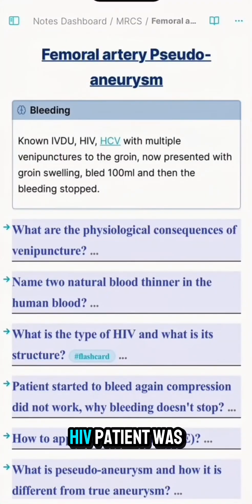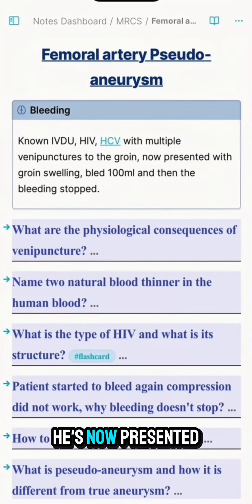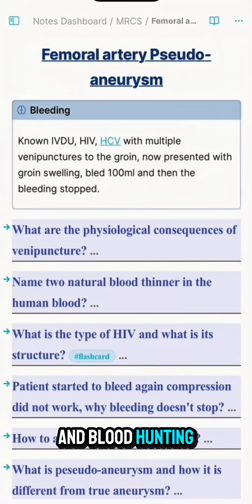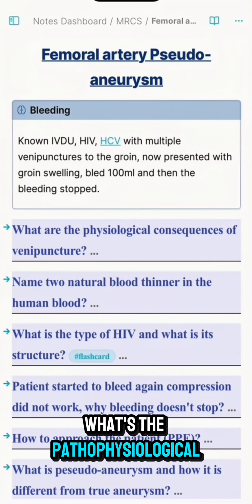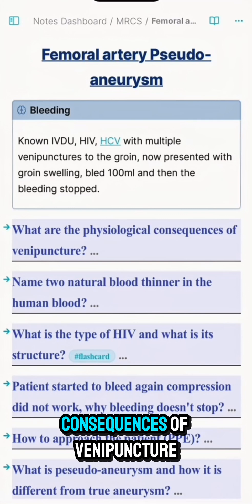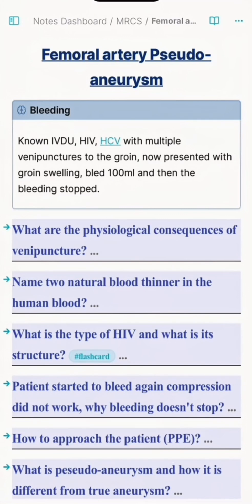A drug user with HCV and HIV, having had multiple venipunctures to the groin, presents with groin swelling. The bleeding stopped after 100ml. The question asks about the pathophysiological consequences of venipuncture — essentially asking about hemostasis.